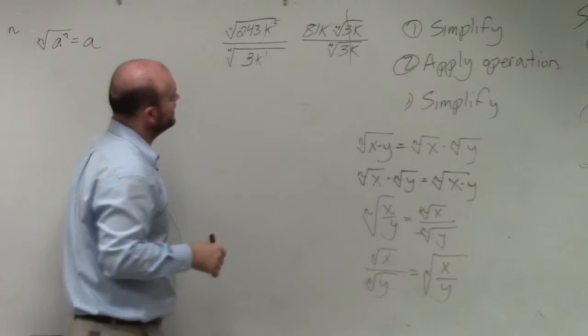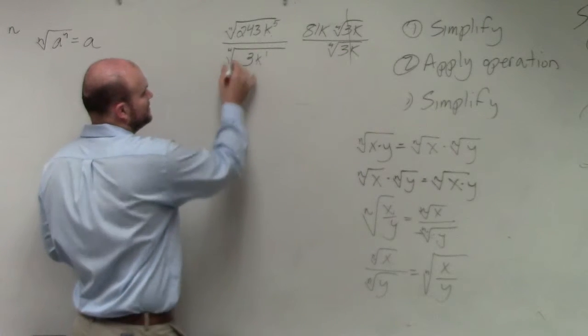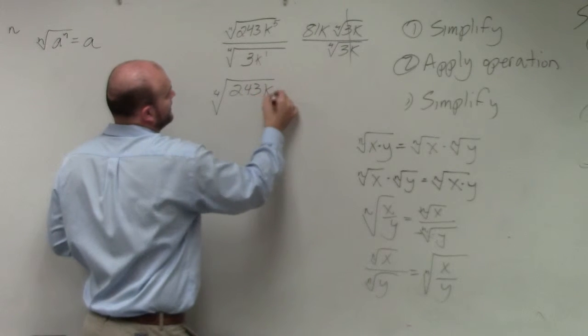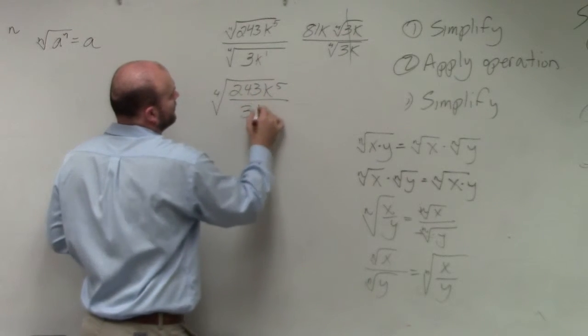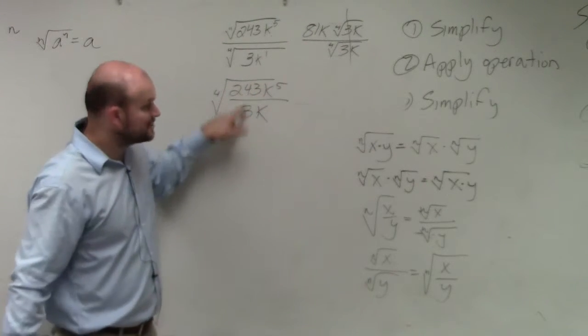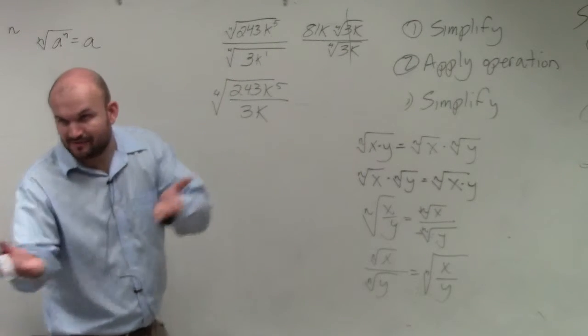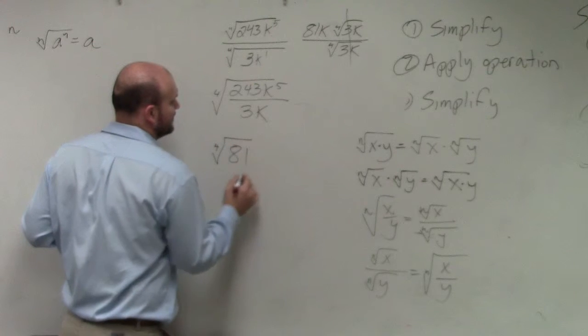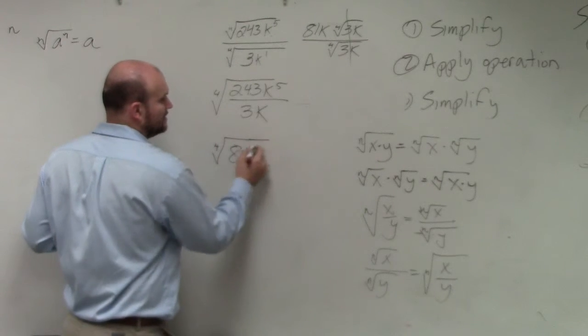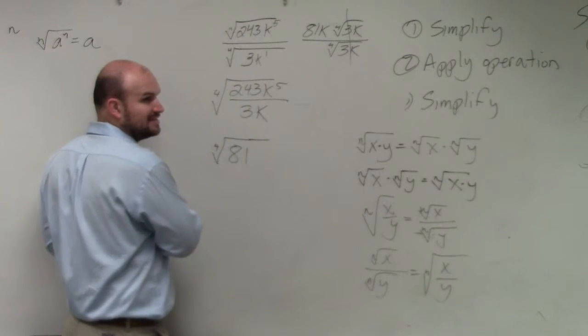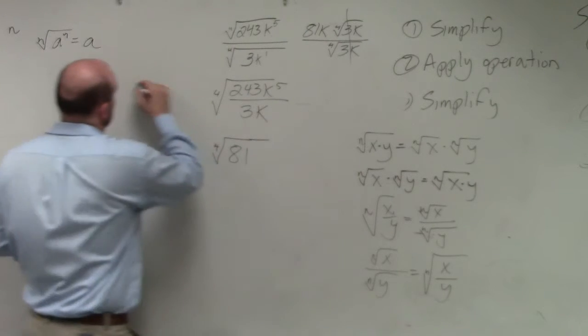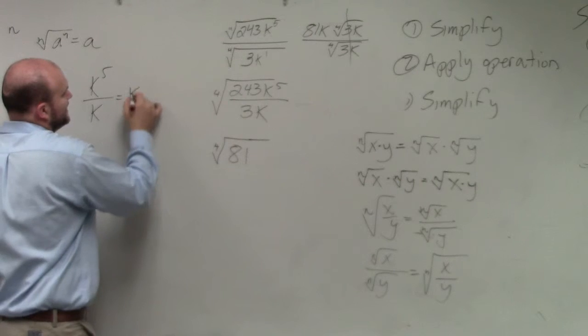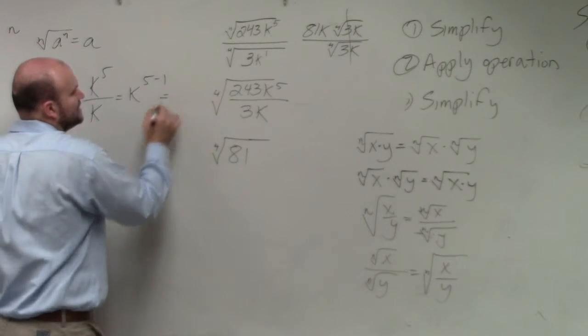Or what I also want to teach is, you guys could write this as 243k to the fifth over 3k. Now, does 3 divide into 243? Again, if you use, go back and look at your calculator. You guys could see that, yes, it does. It goes in there 81 times. Right? And is k divided into k to the fifth? K to the fifth divided by k is equal to k to the fifth minus 1, which is k to the fourth.